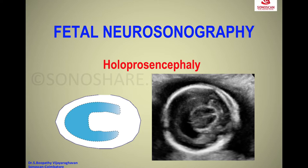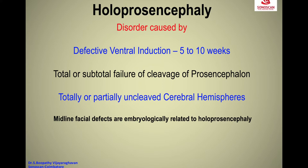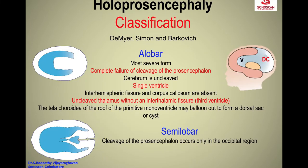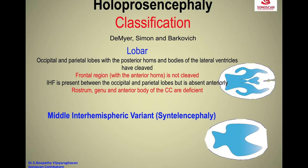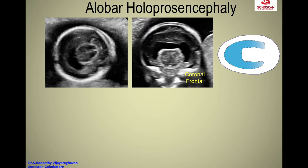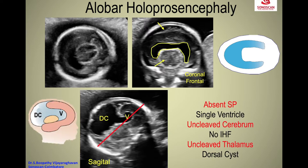Holoprosencephaly is associated with midline facial defects which are embryologically related. The middle interhemispheric occipital region is seen here in the schematic. The frontal portion, also called semilobar, where cleavage occurred, is superior to the midline orbit as seen in the photograph. There can also be a sinofronal region.